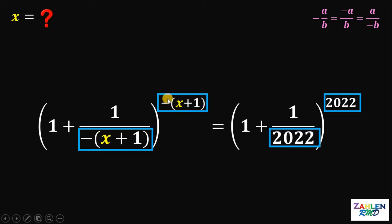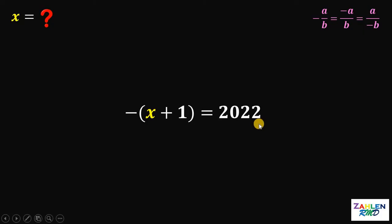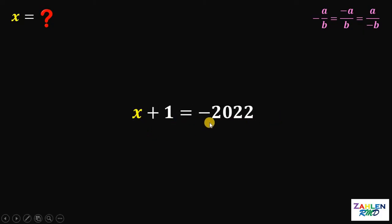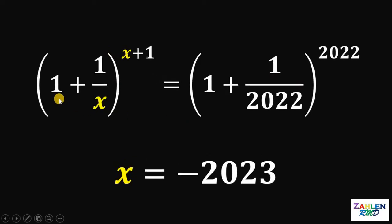Therefore, we can say that negative x plus 1 is equivalent to 2022. Let's solve for the value of x. Multiplying both sides by negative 1 gives us x plus 1 equals negative 2022. Subtracting 1 from both sides gives us x equals negative 2023. Therefore, the value of x in this equation — 1 plus 1 over x, raised to x plus 1, equals 1 plus 1 over 2022, raised to 2022 — is negative 2023.